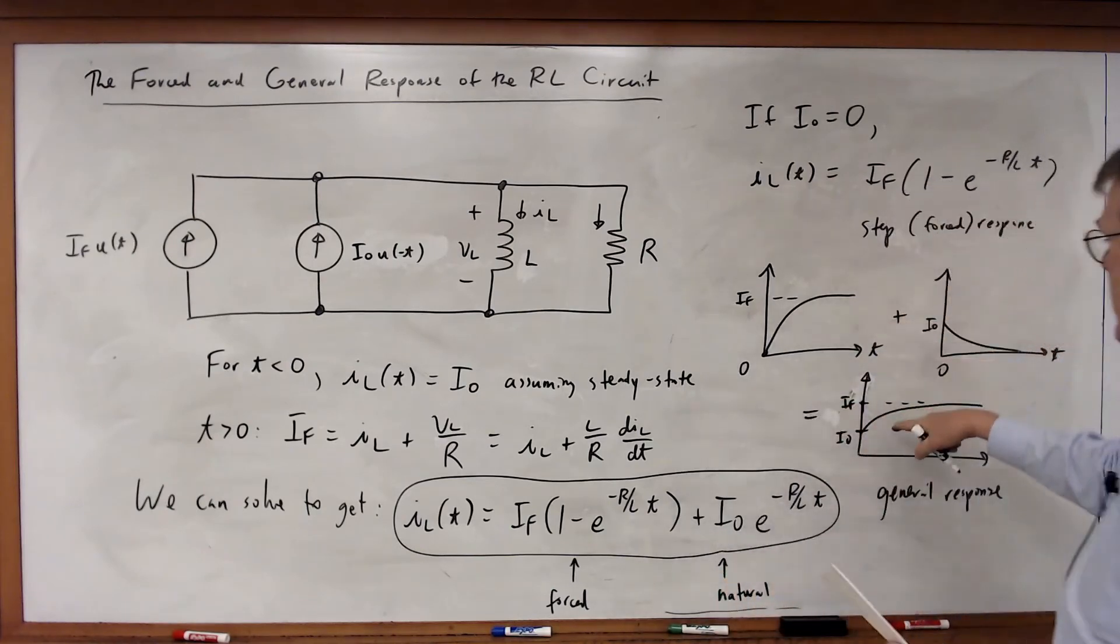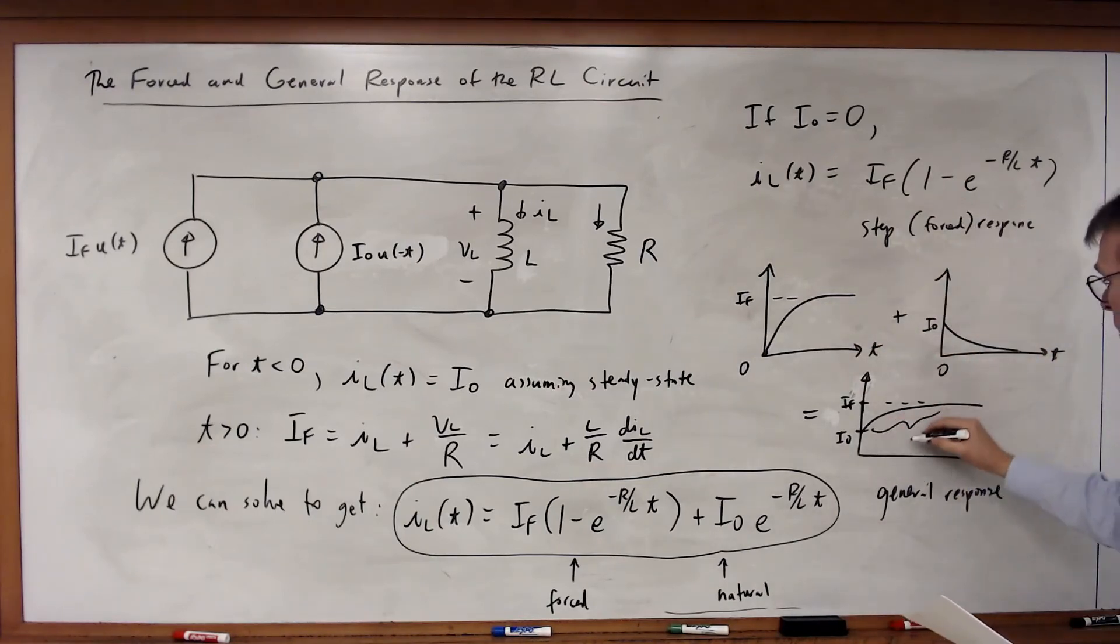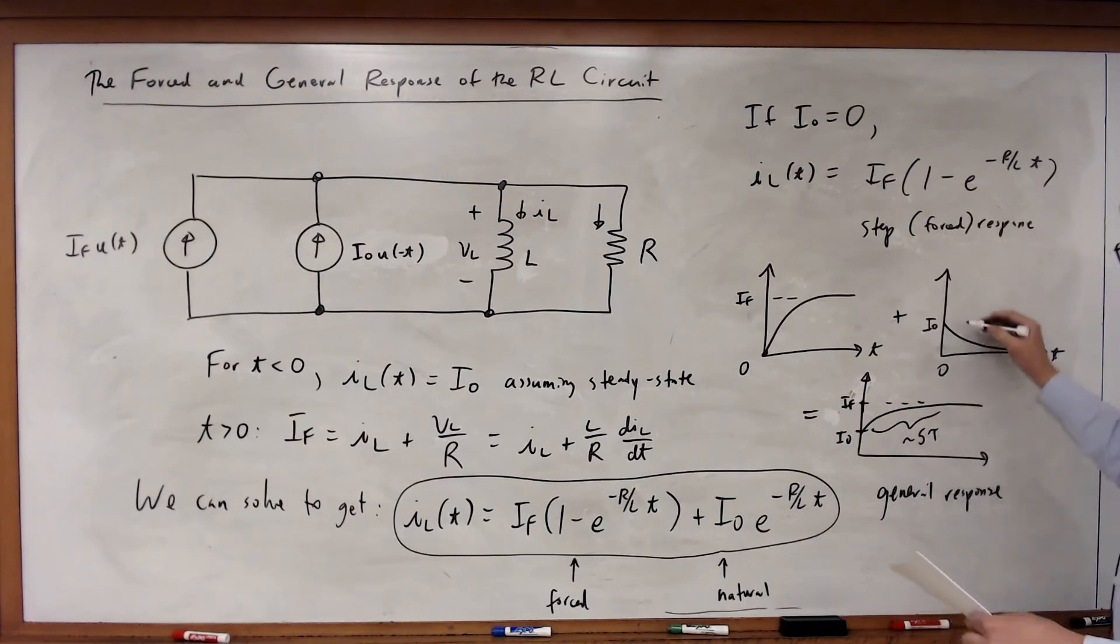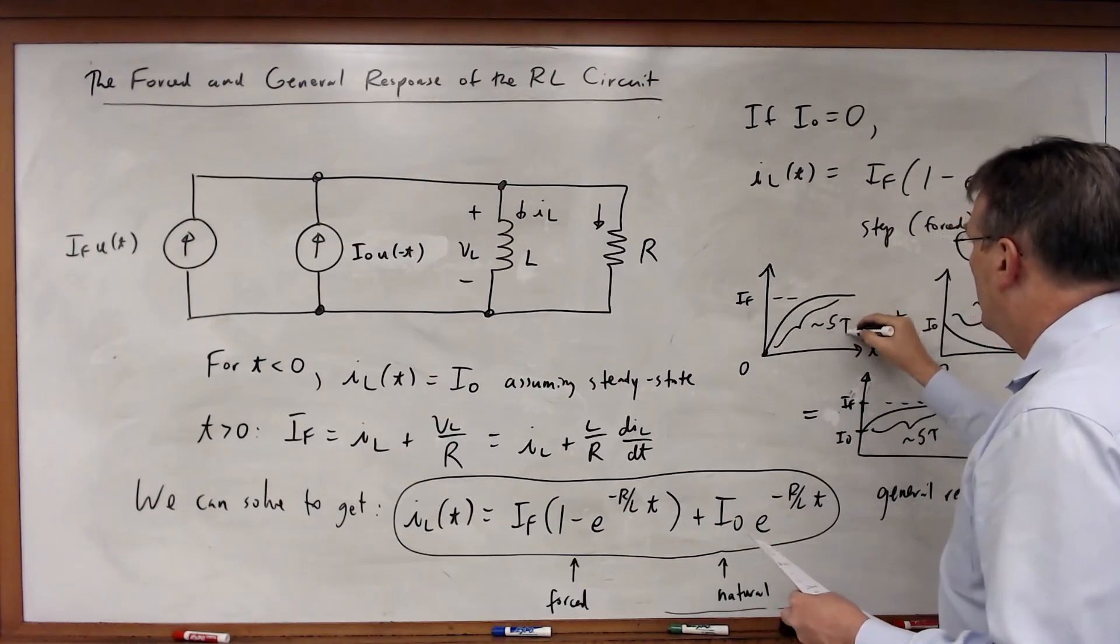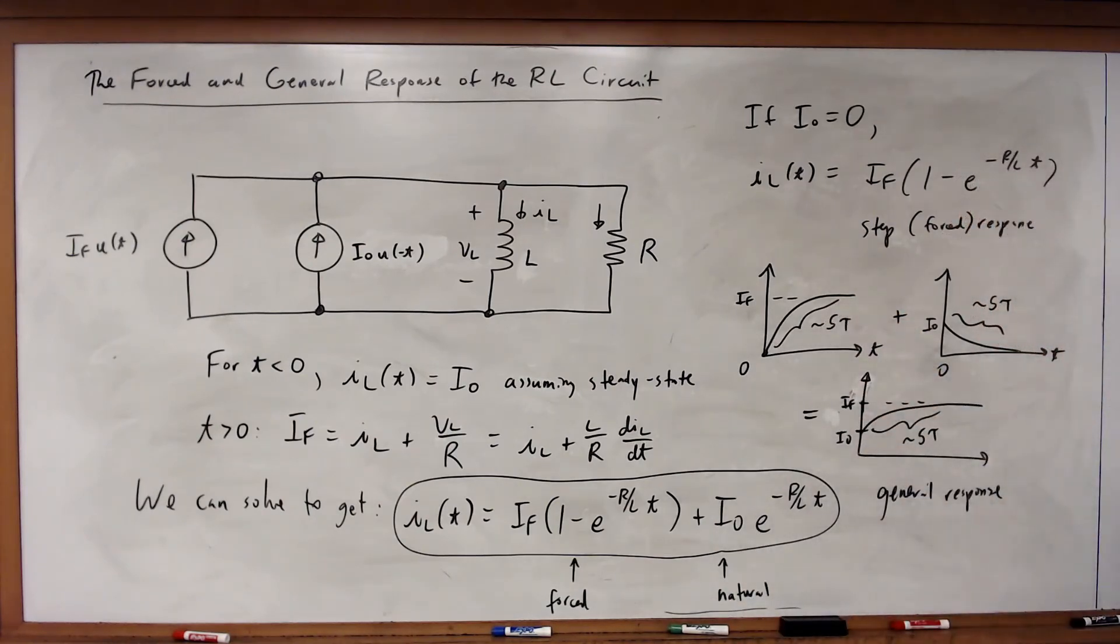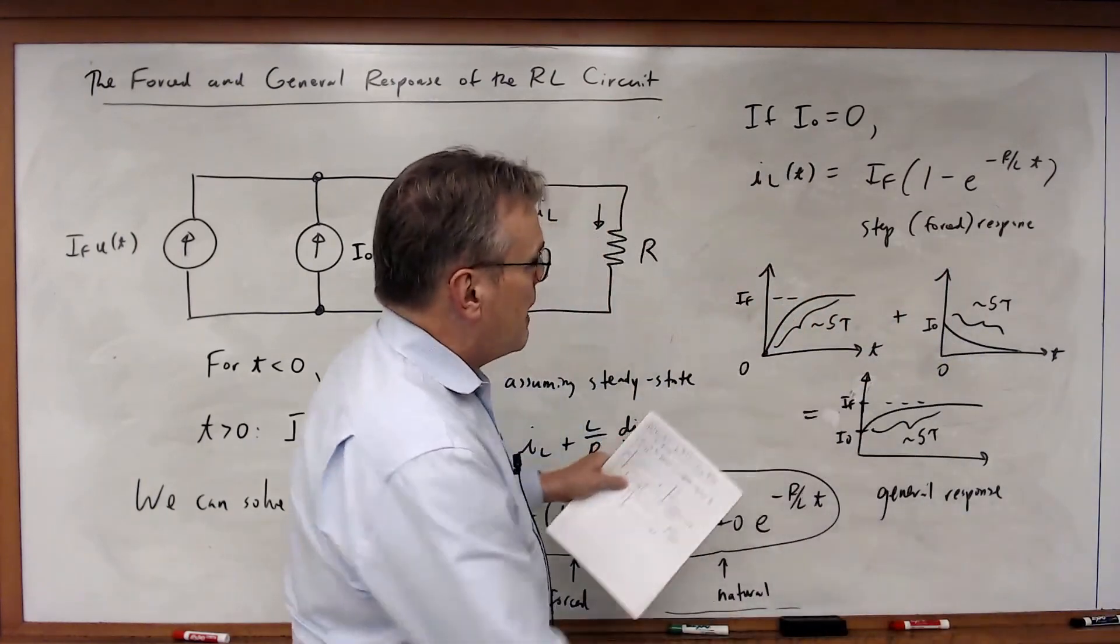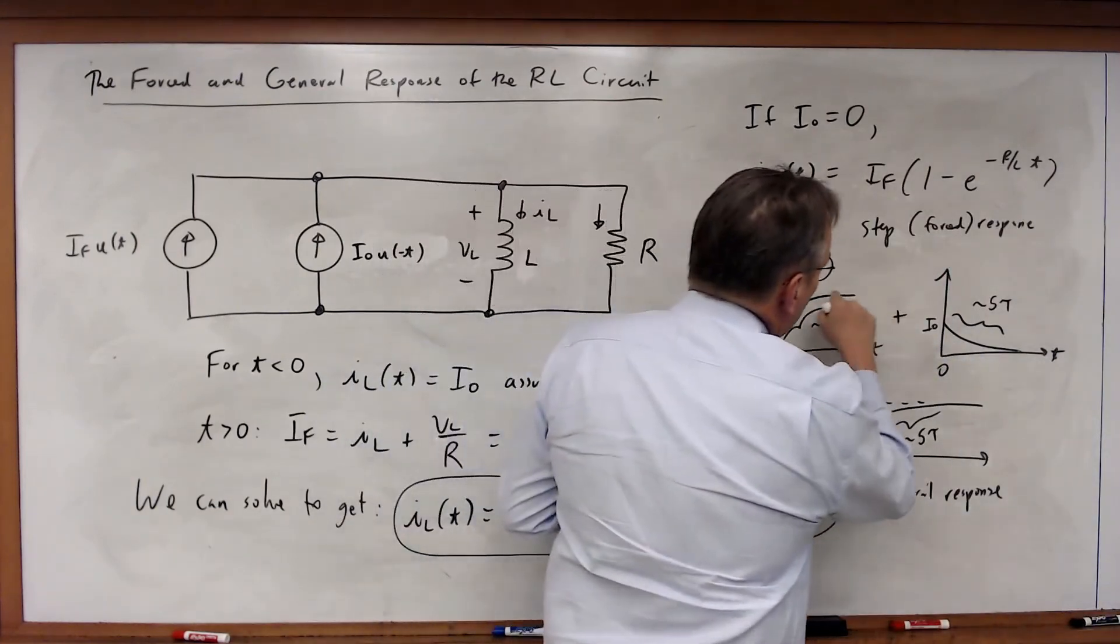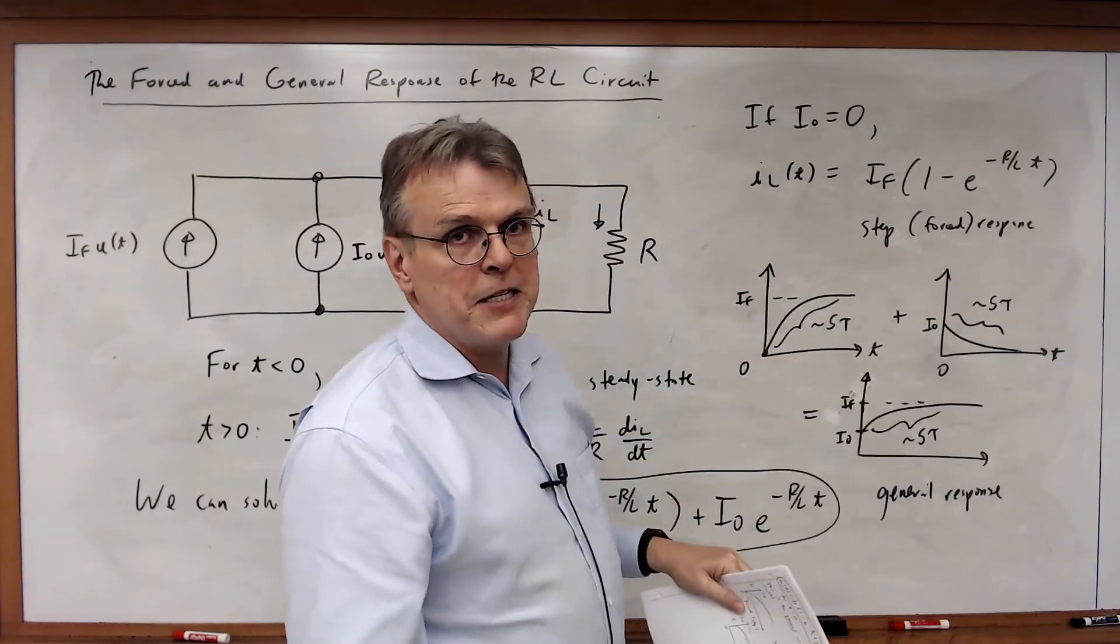So, once again, the general response is simply the superposition of the forced plus the natural response. And, once again, all of this happens in 5 tau. Once again, we note that as we converge to our final response, once again, we enter steady state again.